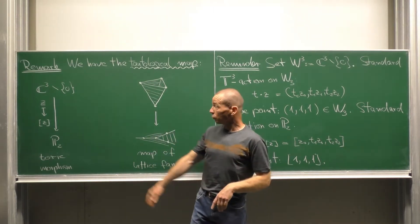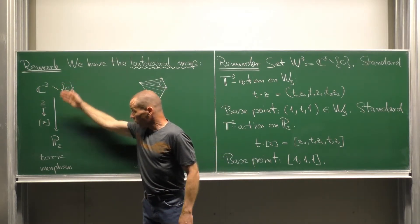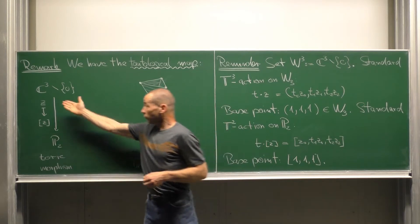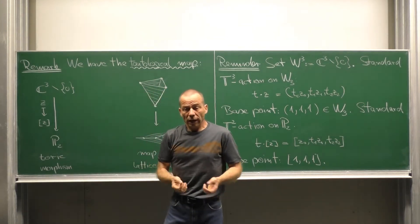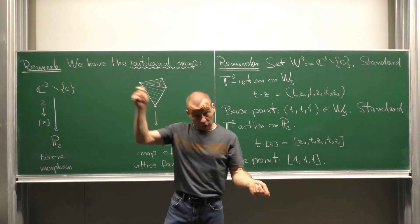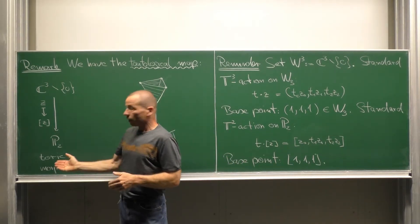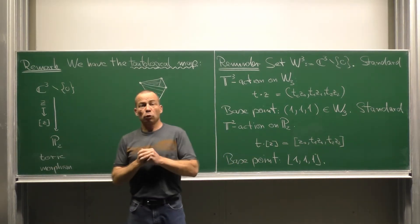This tautological map goes from C³ minus origin to the plane P² and it sends a non-zero vector Z to the line through the origin and this vector Z. As we will see in a minute, this is a toric morphism.